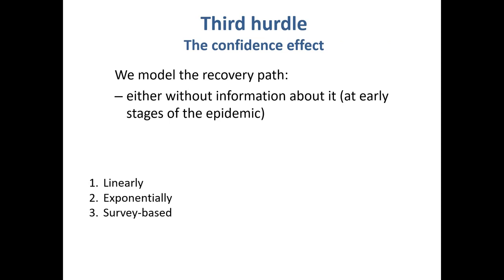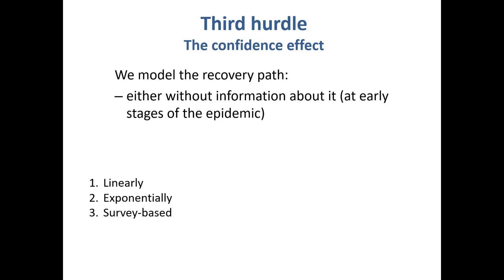The third hurdle deals with the confidence effect. At the early stages of the epidemic, we don't have much information, so we can base it on previous epidemics. Once we have information, we can model it with censored panel data Tobit models.